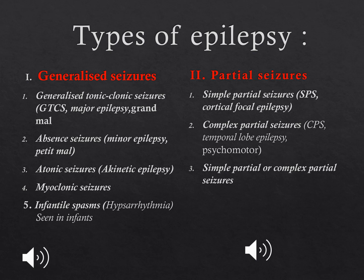Coming to partial seizures, these are subclassified into three types: simple partial, complex partial, and simple partial evolving to complex partial seizures. In simple partial seizures, a person does not lose consciousness; they remain conscious and this period lasts half to one minute, during which convulsions or fits occur only in a group of muscles. In complex partial seizures, the person loses consciousness and the duration is one to two minutes, with confused behavior and purposeless movements. Generally, partial seizures come first and then continue with generalized tonic-clonic seizures with loss of consciousness.